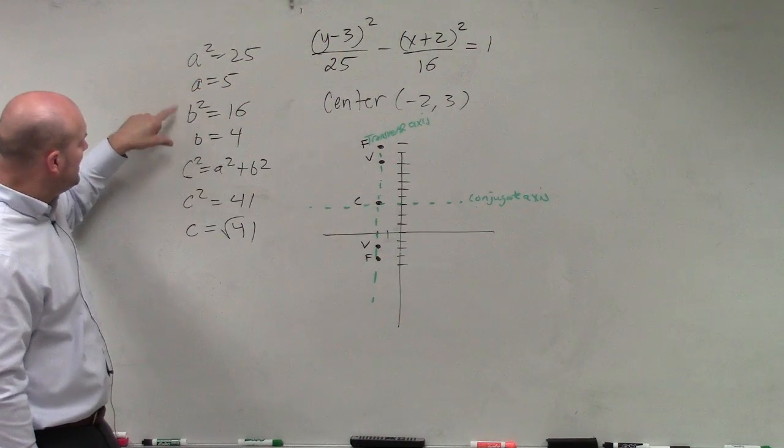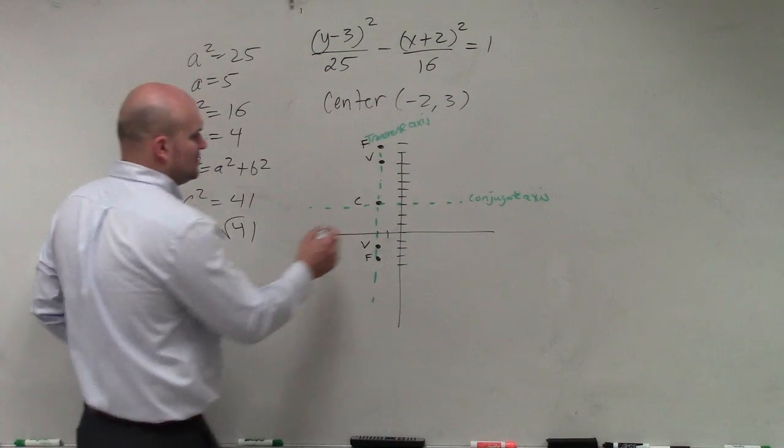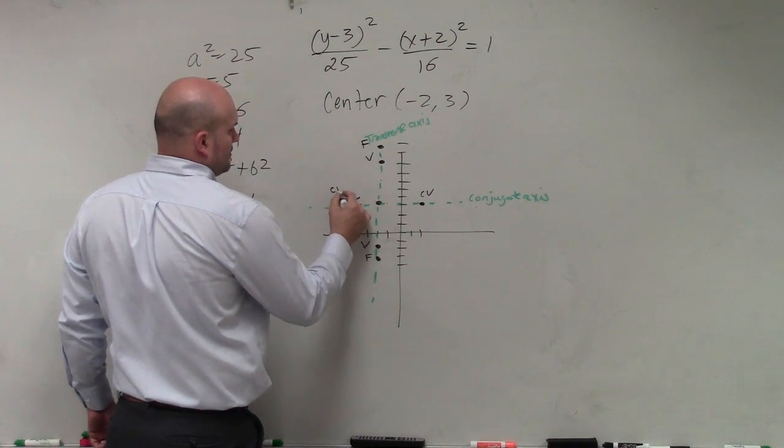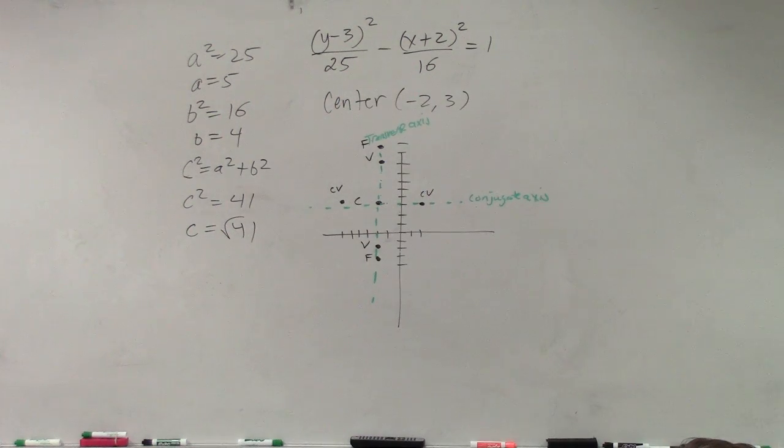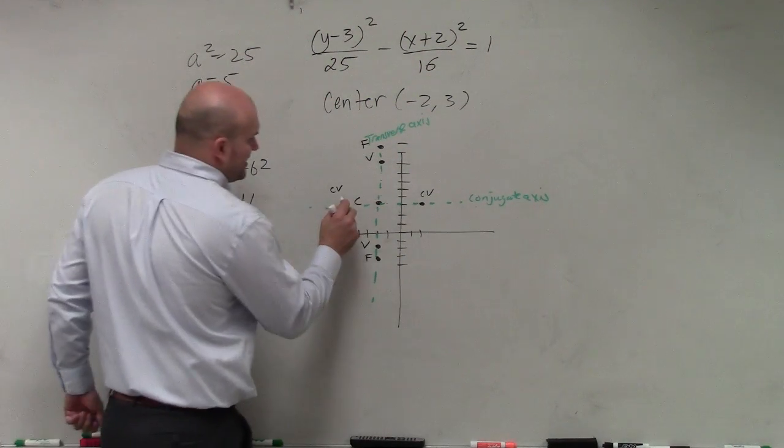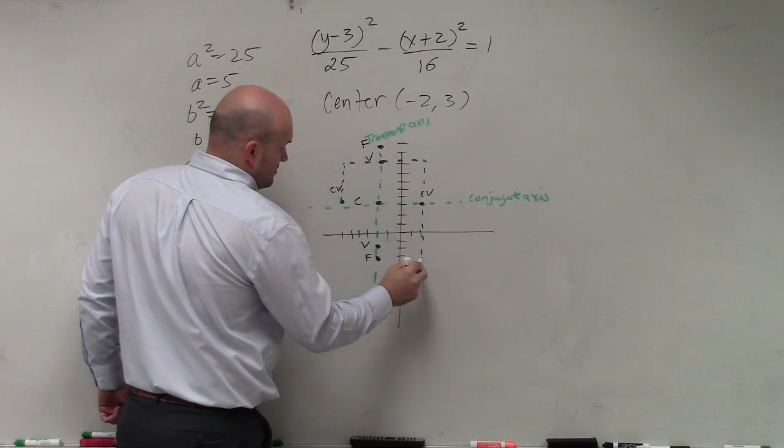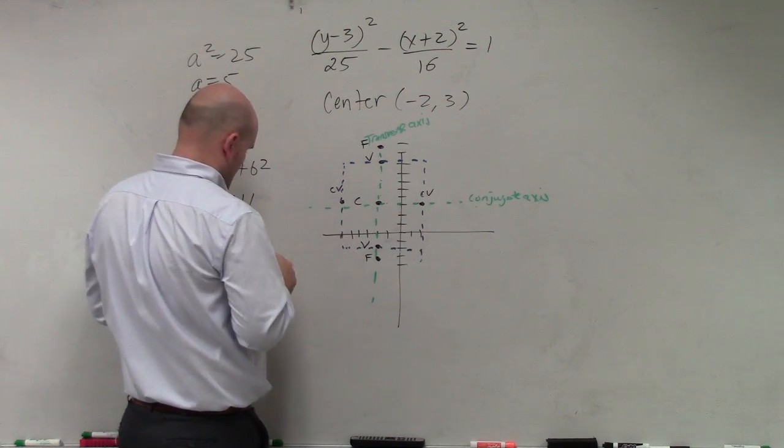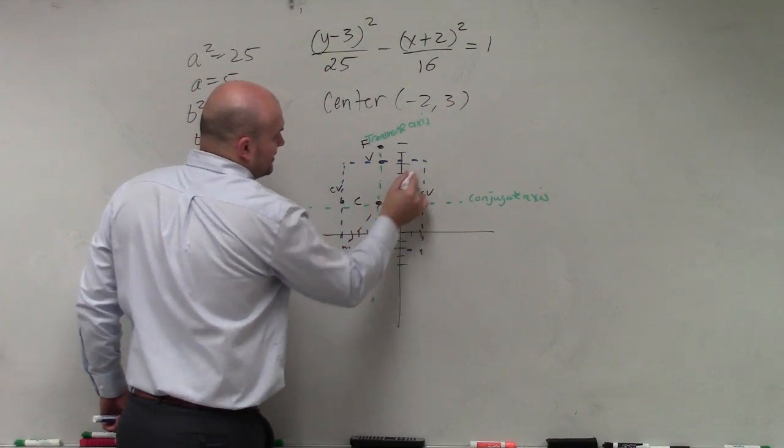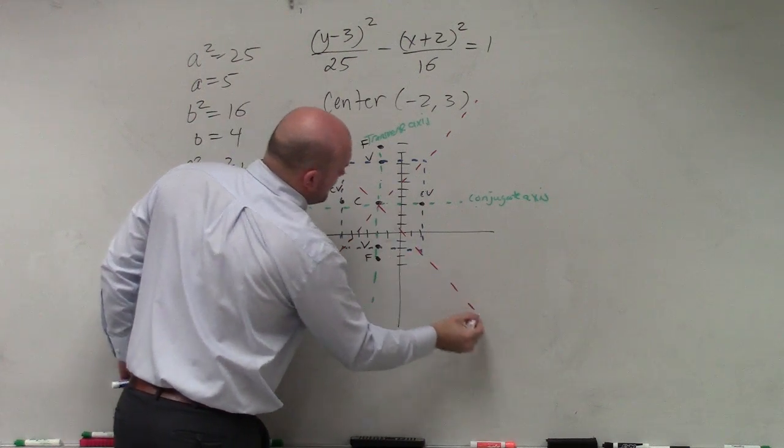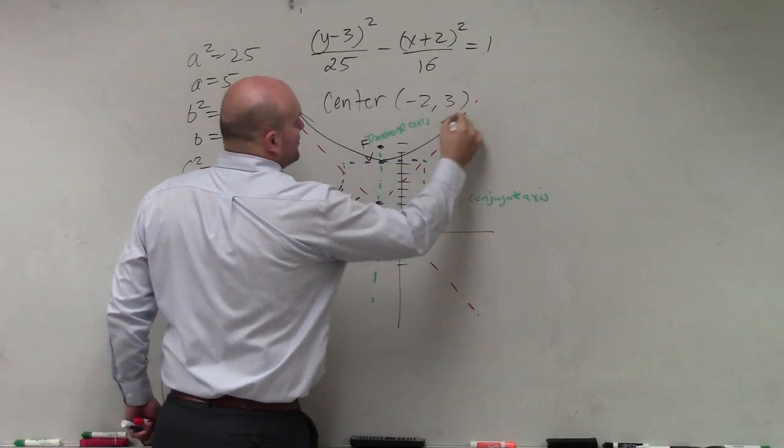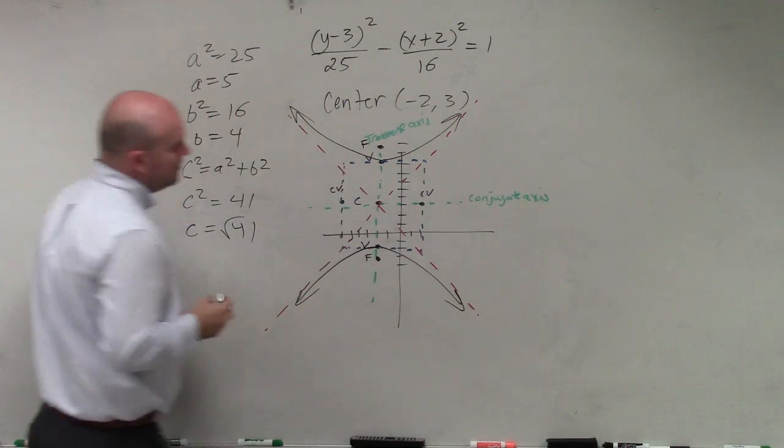To sketch my asymptotes, I need b which is 4 away. So one, two, three, four - co-vertex. One, two, three, four - co-vertex. I'm going to use a different color. To sketch the asymptotes, create a box with your vertices and co-vertices. Then cross diagonals through the center. Now sketch the hyperbola through the vertices, approaching the asymptotes. There's the hyperbola.